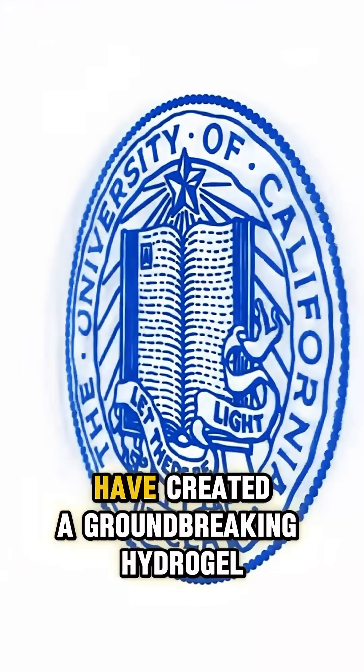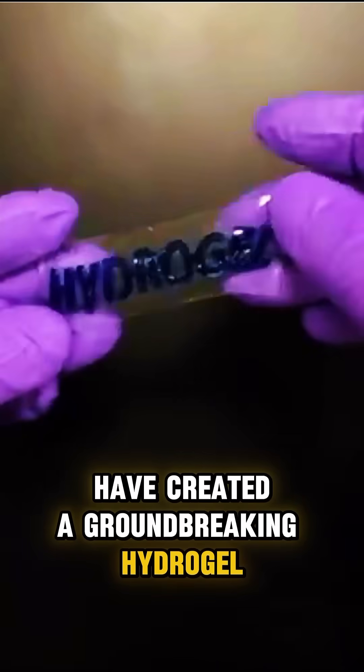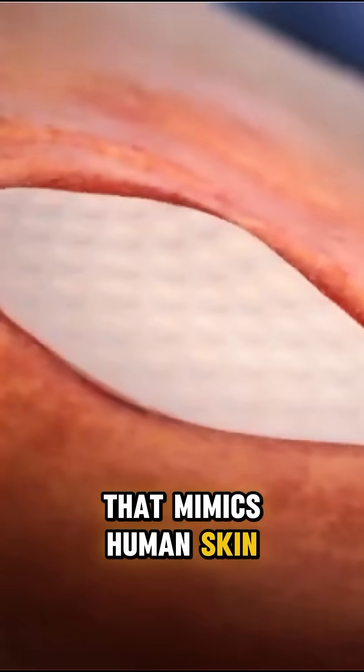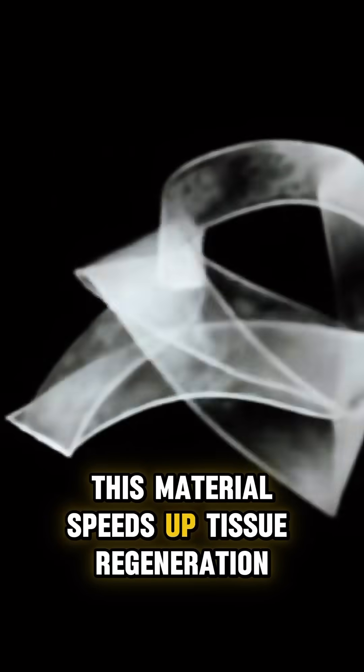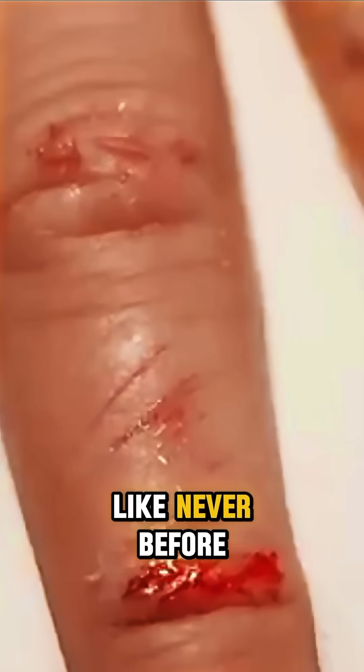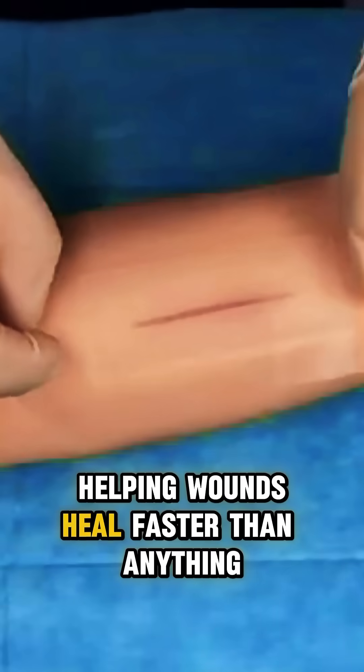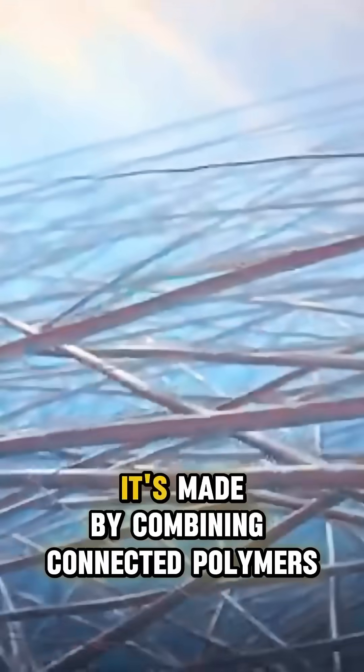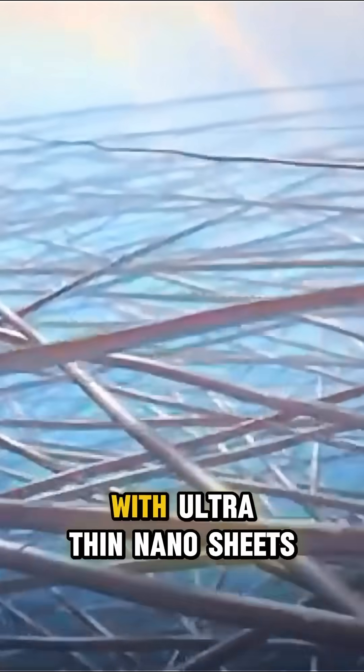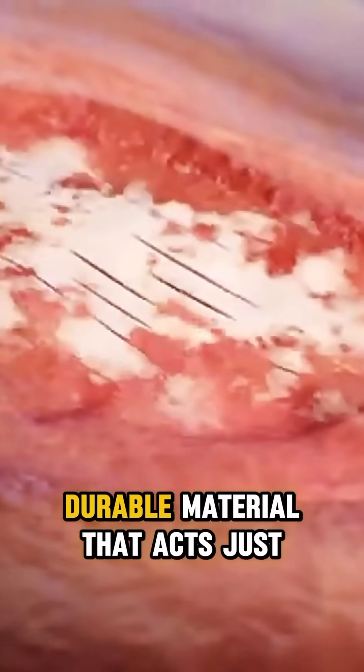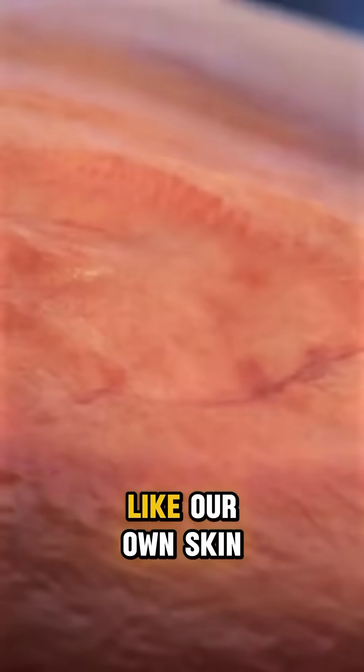Researchers at UCLA have created a groundbreaking hydrogel that mimics human skin. This material speeds up tissue regeneration like never before, helping wounds heal faster than anything we've seen before. It's made by combining connected polymers with ultra-thin nanosheets of clay, creating a flexible, durable material that acts just like our own skin.